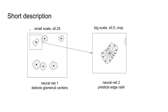First we resize the image to a small scale. The first net detects centers of each glomerulus. Then we make a crop around each glomerulus, and the second net predicts a radius on the edge.